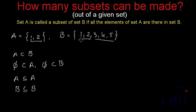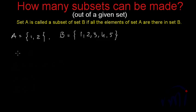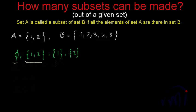So if we try to find all the possible subsets of a set, we will definitely have phi and the set itself. For set A with elements 1 and 2, the subsets are: phi, the set {1,2} itself, {1}, and {2}. There are four subsets total for a set with two elements.